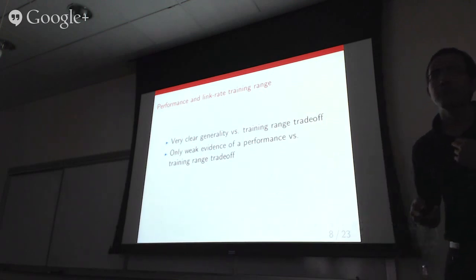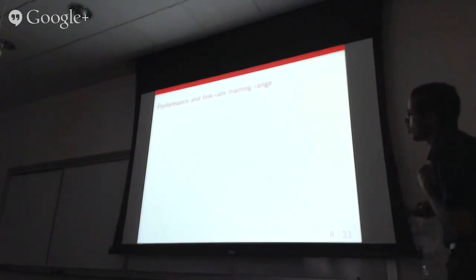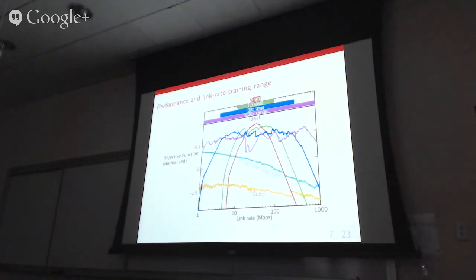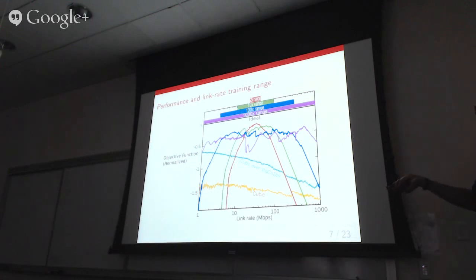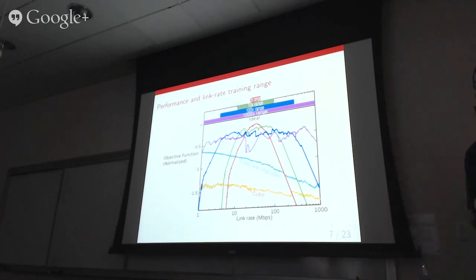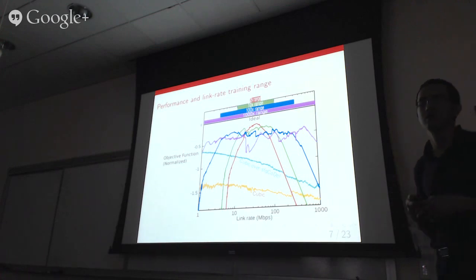Audience question: why only compare against Cubic? We compared with several other TCP flavors as well. Broadly, the conclusions are similar because they all fill buffers and rely on drops. Compound TCP does rely on delay as well, but we've broadly seen similar results with other TCP variants.